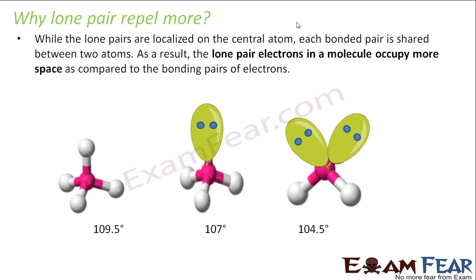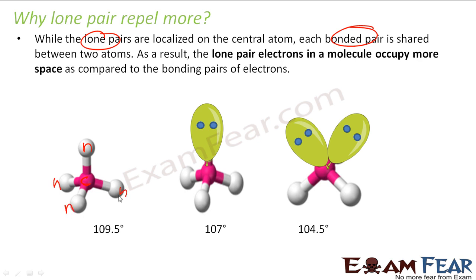So why do lone pairs repel more? The lone pairs are localized on the central atom itself. For example, this lone pair is on the central atom itself. When you talk about the bonded pair, it is shared between two atoms — for example, between carbon and hydrogen. So in methane CH4, there is no lone pair; all are bond pairs.